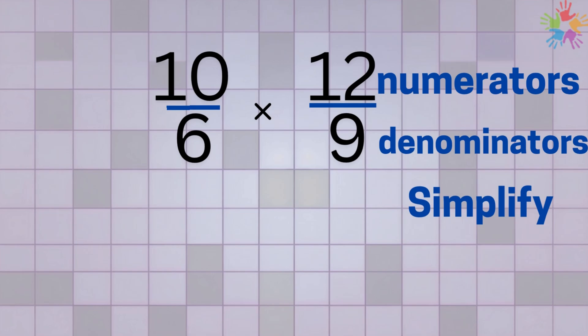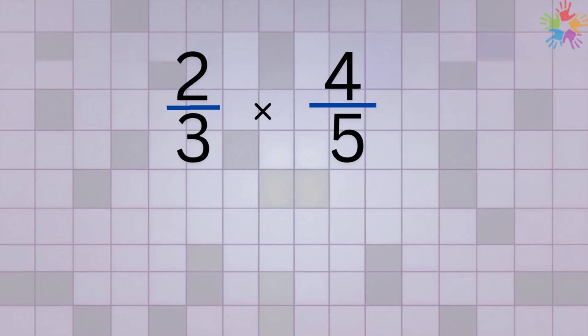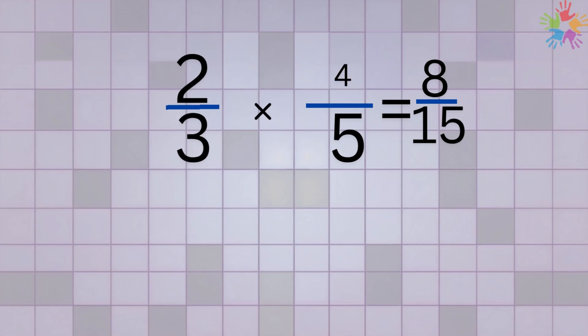Let's see an example. Multiply 2 over 3 by 4 over 5. First, multiply the top numbers: 2 times 4 equals 8. Next, multiply the bottom numbers: 3 times 5 equals 15. So 2 over 3 multiplied by 4 over 5 equals 8 over 15. And that's it, nice and easy.